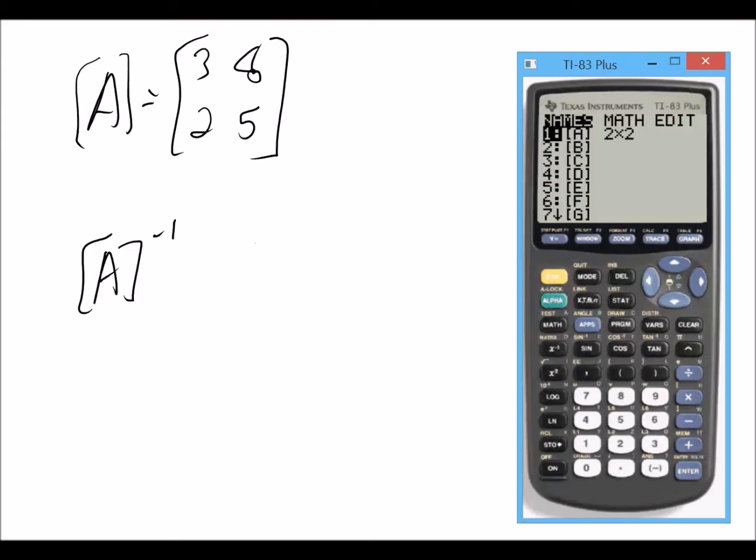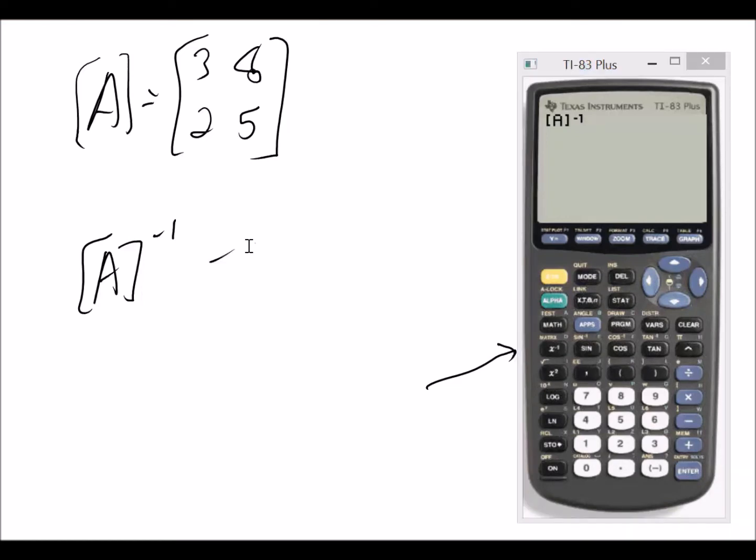We're going to grab that matrix under name, so grab the 2 by 2 matrix. Then you're going to press x to the negative 1, which is right here, to make that inverse matrix.